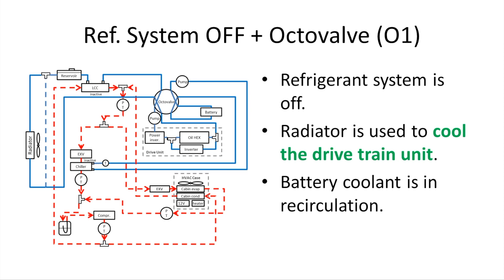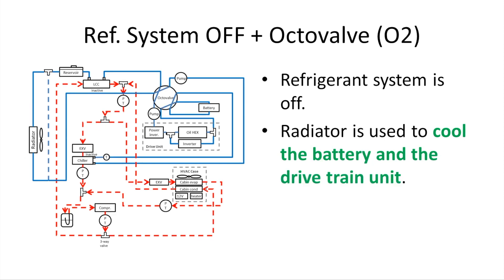This slide shows the mode when the refrigerant system is off and the octa valve is at O1 state. The compressor is off and the dashed lines indicate no refrigerant flow. The radiator is connected with the drivetrain, and the battery is connected with the chiller, which is inactive. Coolant takes heat from the drivetrain and circulates to the radiator to be cooled by incoming ambient air. For the battery coolant loop, coolant recirculates through the battery to minimize temperature spread within the battery.